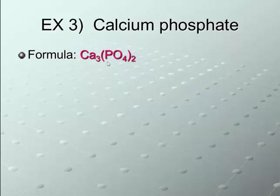So, we do use our charges, rather, and we flip them. Calcium is plus 2, phosphate is minus 3. So, we flip them to get a 3 to 2 ratio.